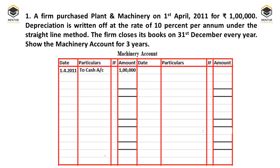At the end of the accounting year, 31st December 2011, we calculate depreciation. The entry is: Depreciation Account Dr. to Machinery Account. In the machinery account we write 'By Depreciation'. From 1st April to 31st December is nine months. Therefore depreciation = 1,00,000 × 10% × 9/12 = Rs. 7,500. This is the first year depreciation since the asset was used for only nine months.